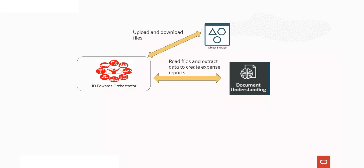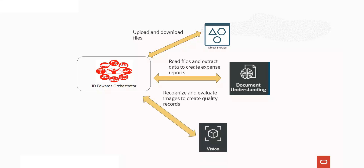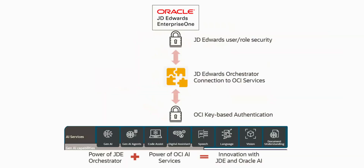For example, you could upload receipt images, extract data from them, and create expense reports in Enterprise One. Similarly, you might upload image files and call the OCI AI Vision Service to recognize the image, evaluate it, and create quality records in the Enterprise One system. In this way, you can combine the power of JD Edwards Orchestrator and its rich set of capabilities with OCI AI services to start your innovation with JD Edwards and Oracle AI.